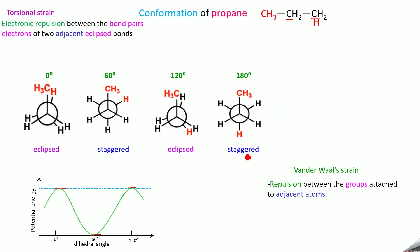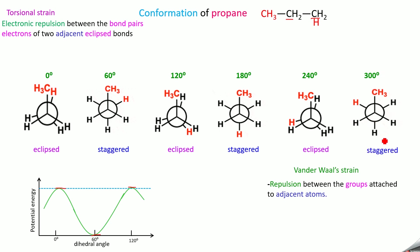Continuing the rotation, at 240 degrees we get an eclipsed form where the potential energy is maximum. When you rotate further, we get the staggered form at 300 degrees where all groups are far away and there is no strain. So, at 0°, 120°, and 240° we get the eclipsed form, and at 60°, 180°, and 300° we get the staggered form.